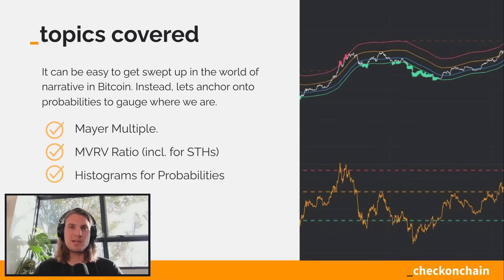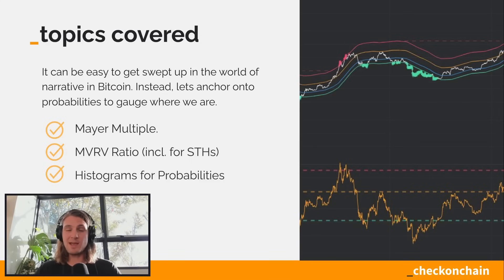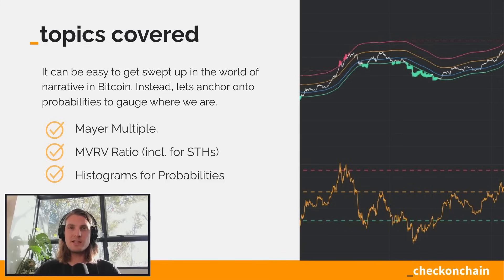It is really easy to get swept up in the world of narrative in Bitcoin. There's always some guy calling for 12K, there's always some guy calling for 1K, and there's always a whole bunch of people calling for a million. There's all these narratives floating around and it's quite difficult to actually distill the signal from the noise. There are a couple of metrics I've used for a long time that are very, very simple — you've probably heard of them before: the Mayer Multiple, which is just a simple ratio of the 200-day moving average in price, and the MVRV ratio.